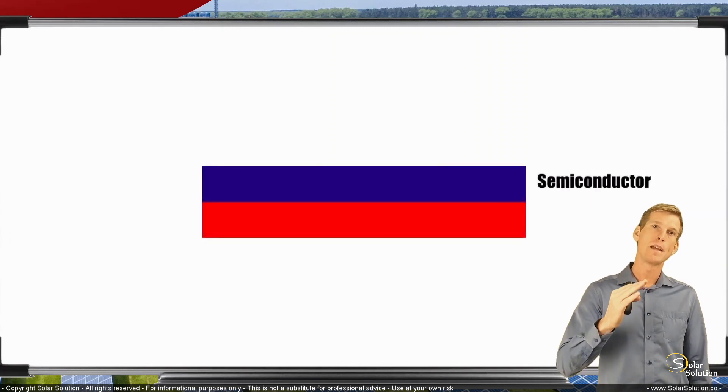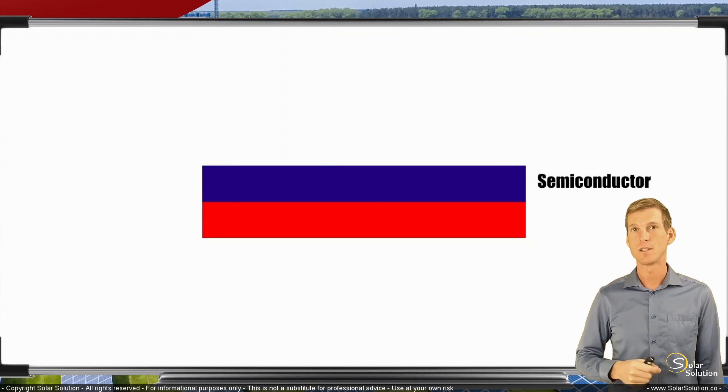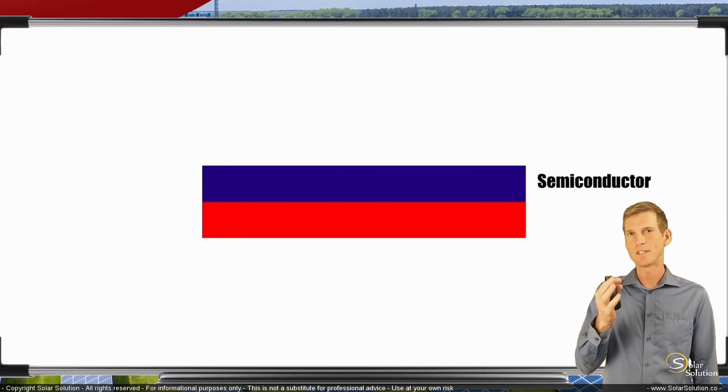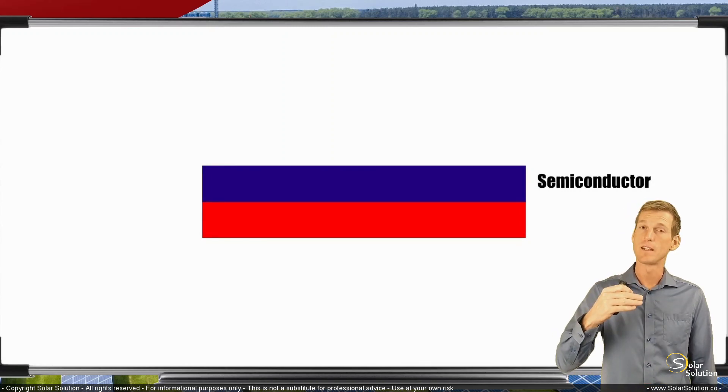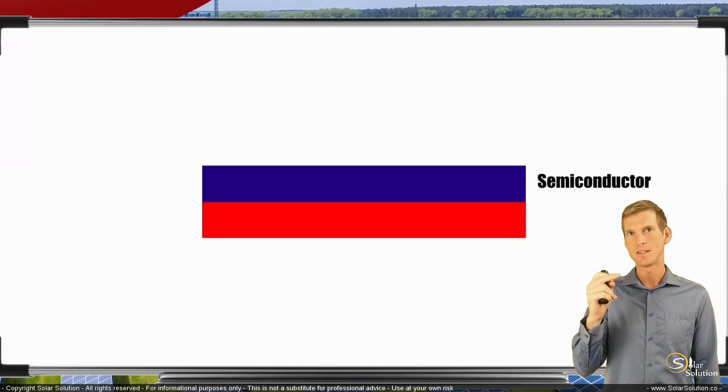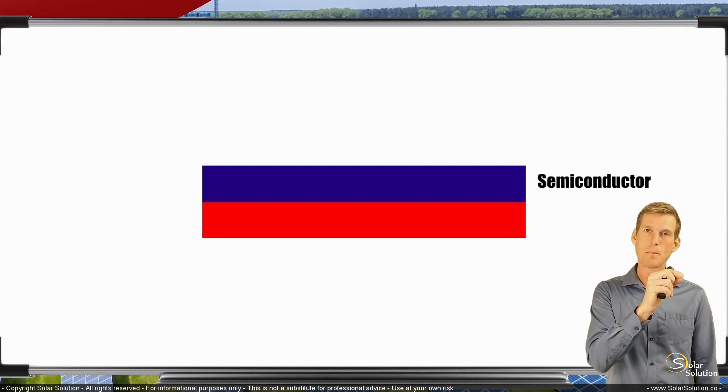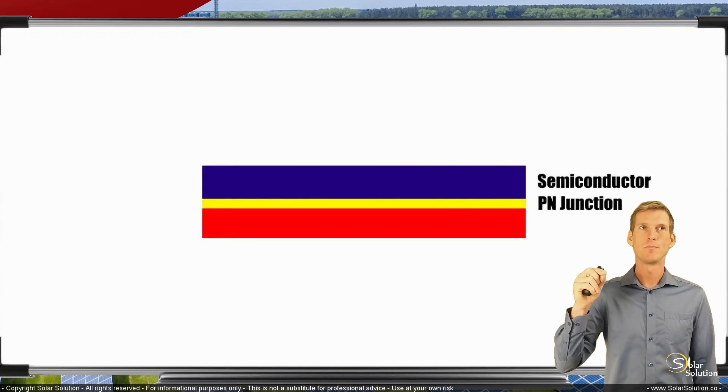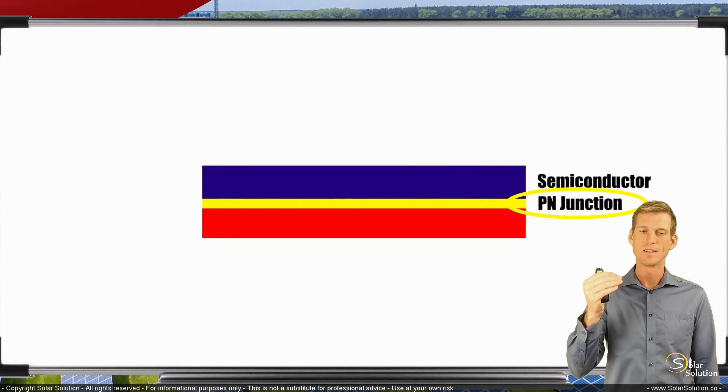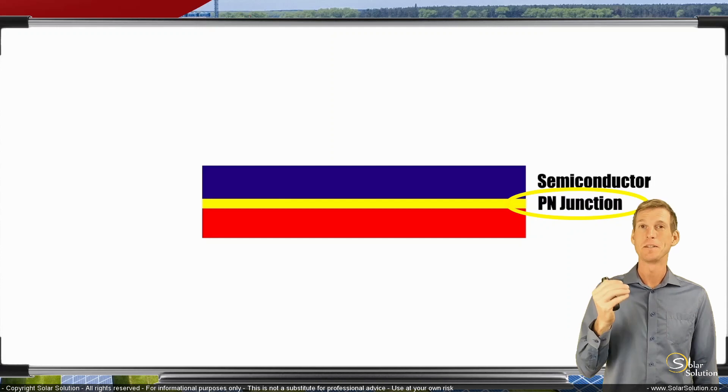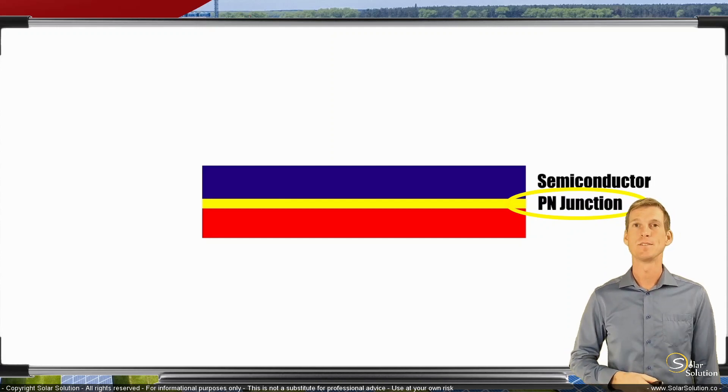The result of these chemical treatments and having a positive P side and a negative N side is that between them we get a very thin boundary layer, called the P-N junction. This is what it's all about—this is what we're trying to create. This is where the magic of the PV effect happens.